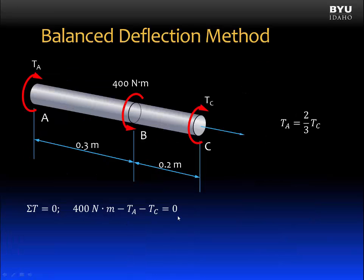Using our equation of static equilibrium, we can substitute in the value for T A and solve for T C is equal to 240 newton meters. Plugging this value into this equation, we get T A is equal to 160 newton meters. They are the same answers we got when we used the force method. And we're done.